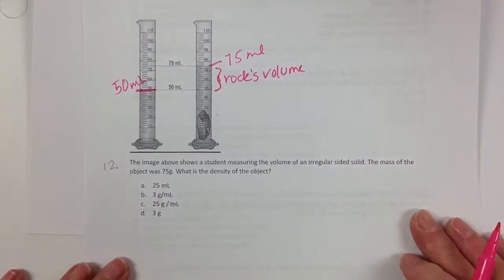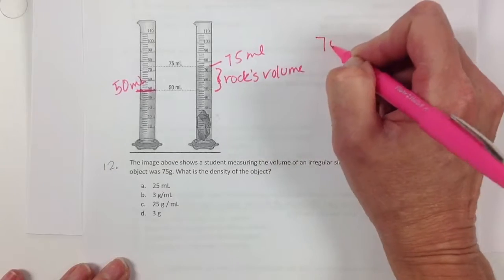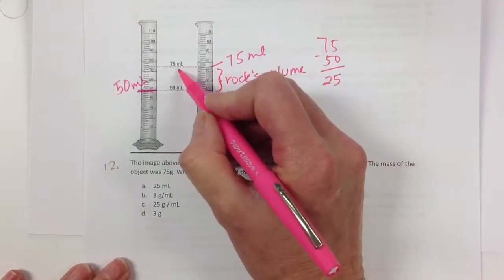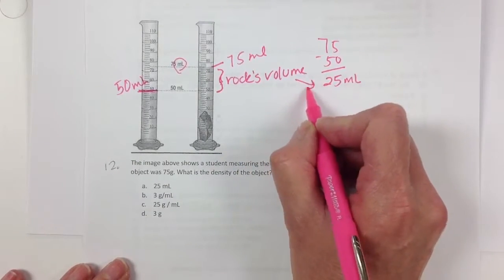Right? So obviously the difference between 75 and 50 is going to be 25. And we're measuring in milliliters. So 25 milliliters is the rock's volume.